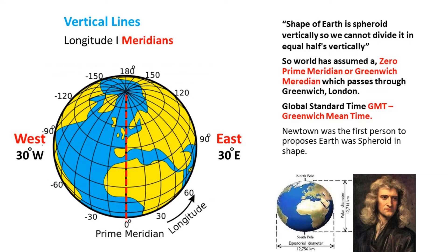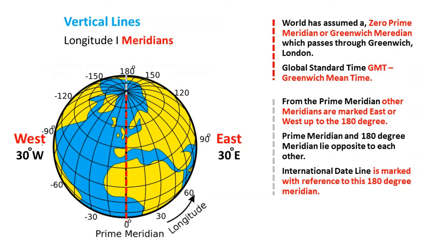You may be asking what Greenwich Mean Time is — you'll find out later in the lesson. From the prime meridian, other meridians are marked east or west up to 180 degrees. Just like latitudes, we need to identify whether a longitude is in the east or in the west.